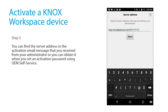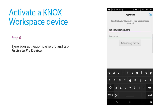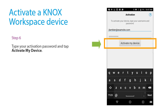You can find the server address in the activation email message that you received from your administrator, or you can obtain it when you set an activation password using UEM self-service. Type your activation password and tap Activate my device.